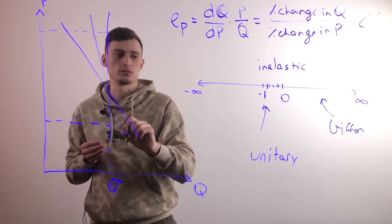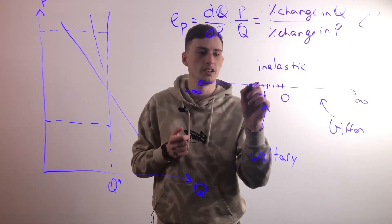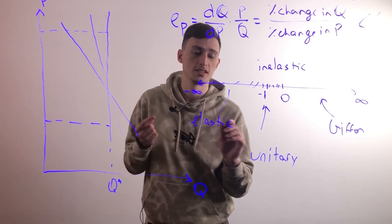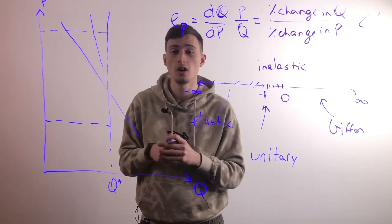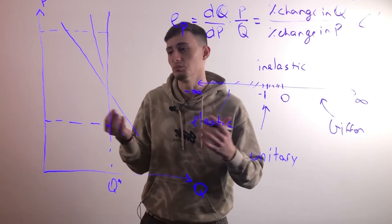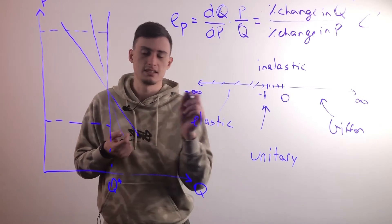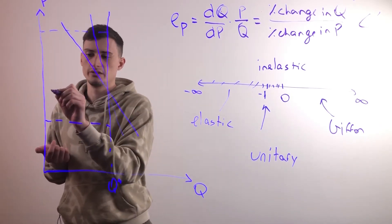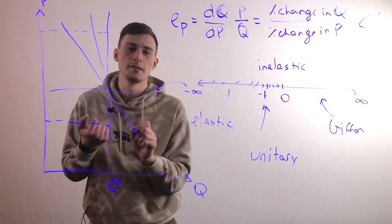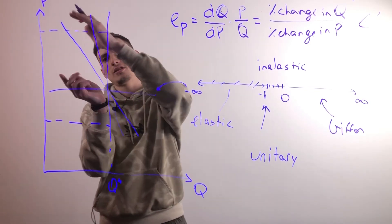And anything below negative one and going all the way off to infinity is called elastic, like a rubber band, because for every one percent change in the price, the quantity goes down more than one percent, which means people don't really need that good as much. And it will be flatter. So a perfectly elastic curve, which we've never seen in real life, will be completely flat. That's when elasticity is equal to negative infinity. But in the real world, it'll never be negative infinity.